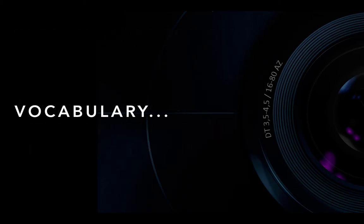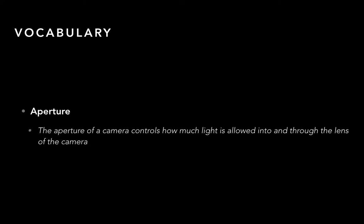So we need to start off with the vocab. Aperture we've already sort of talked about when we did the DSLR, but just to make sure that we're on the same page: aperture is how much light is allowed into and through the lens itself. When we talk about shutter in the next shooting assignment, that's how long the light is allowed in. This is how much can come into the camera.